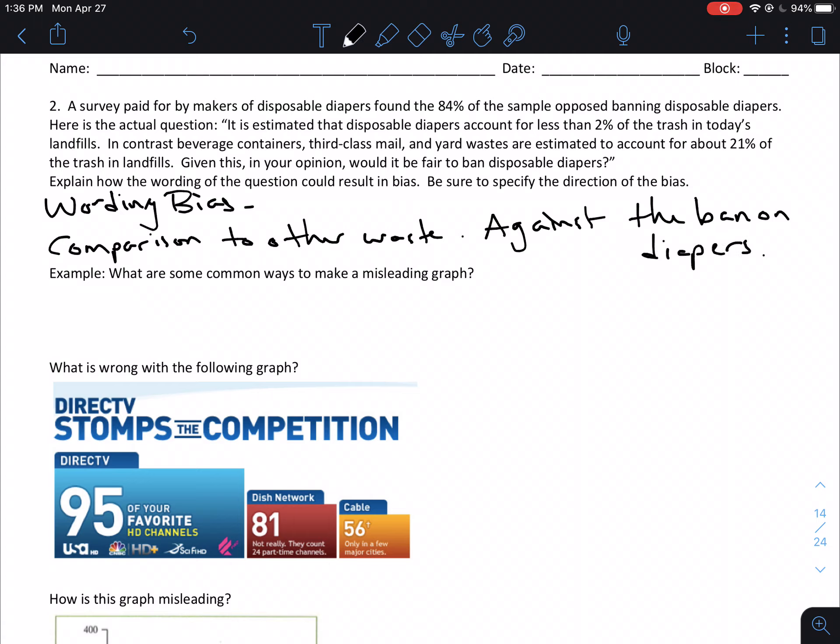So the direction of this bias would definitely be against the ban on diapers. Which should be kind of a no-brainer. It's a survey that's being paid for by makers of disposable diapers. So clearly they're going to want the data to show that people are against a ban on disposable diapers. And to do that, obviously, that's where they compared it to other waste. That's where the wording bias came into play in this particular scenario.